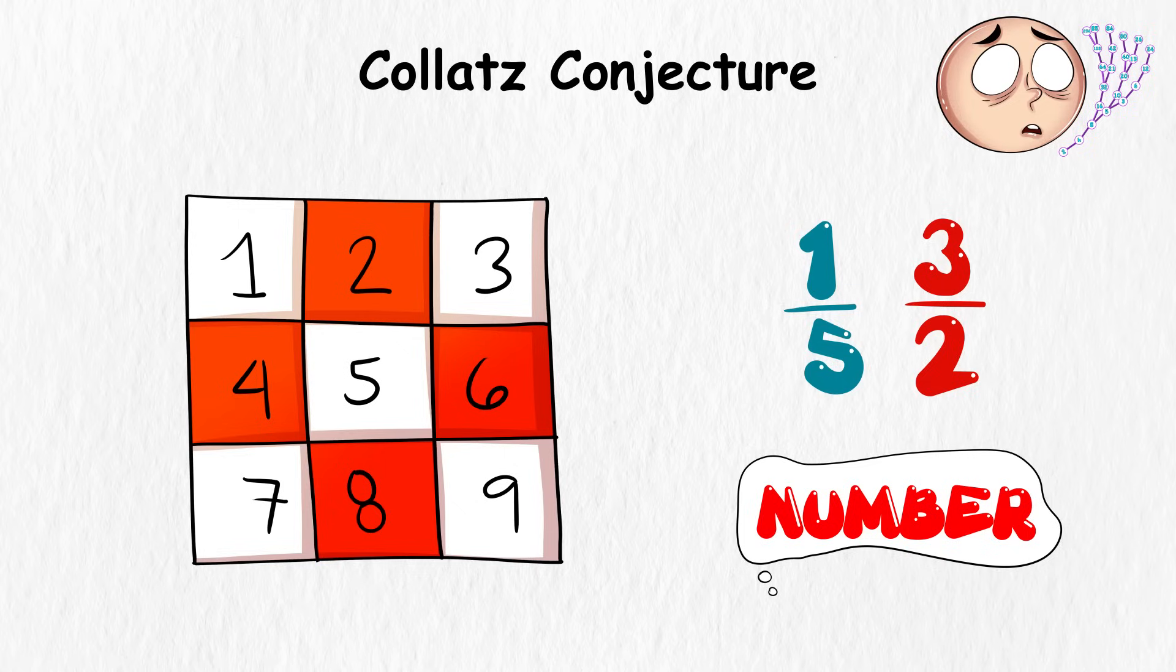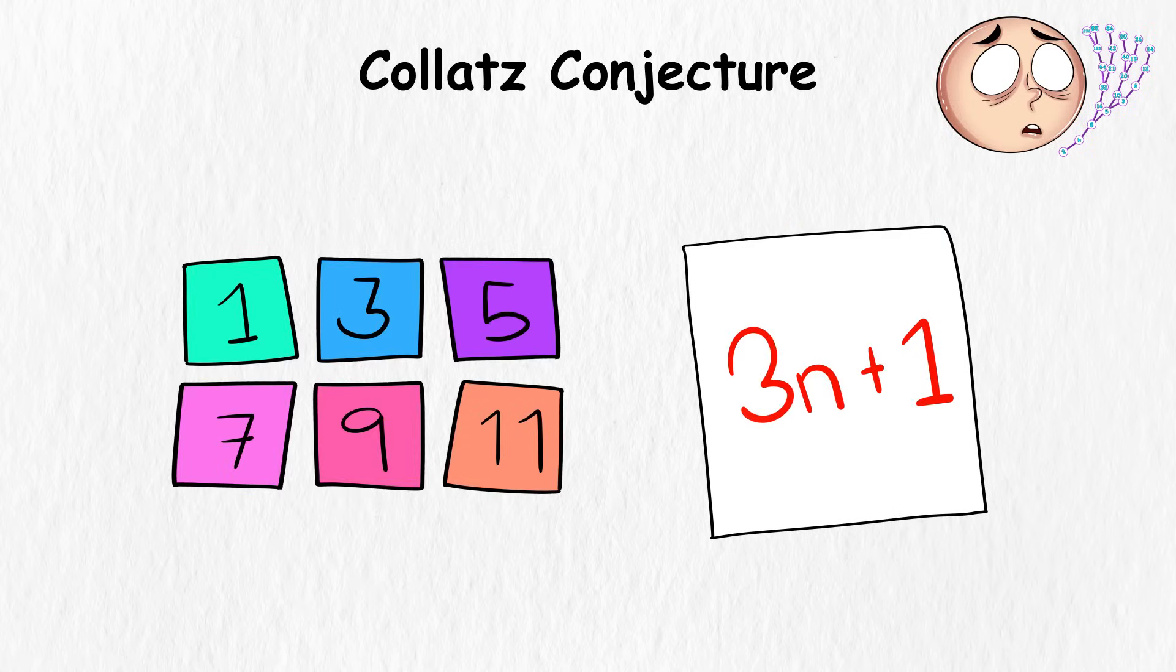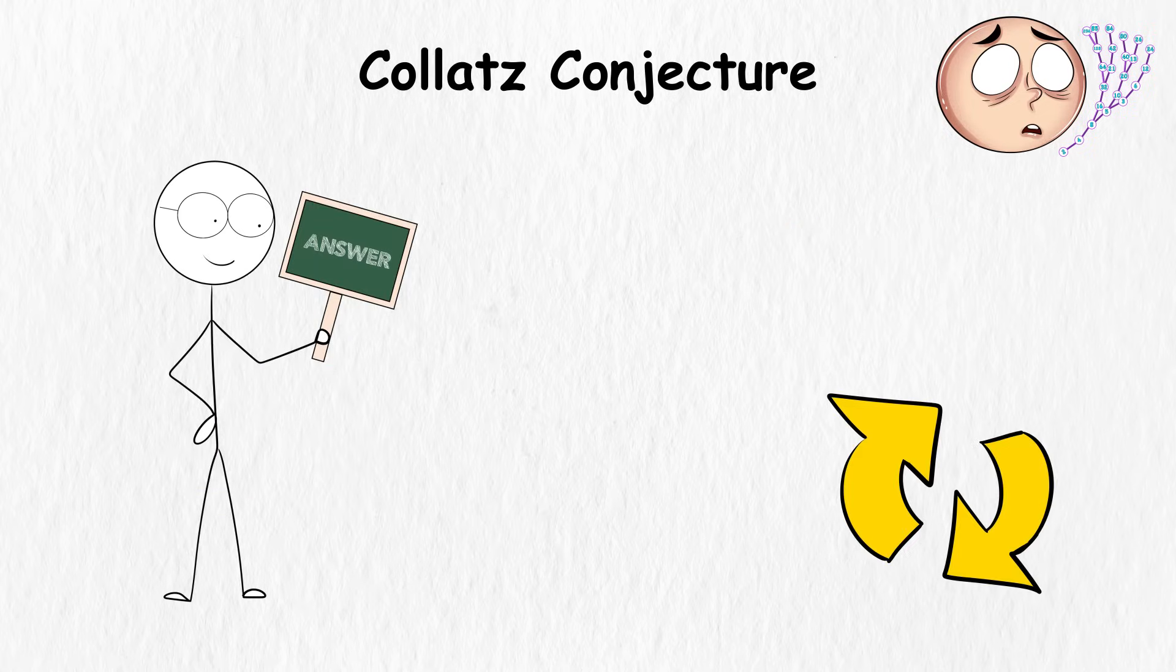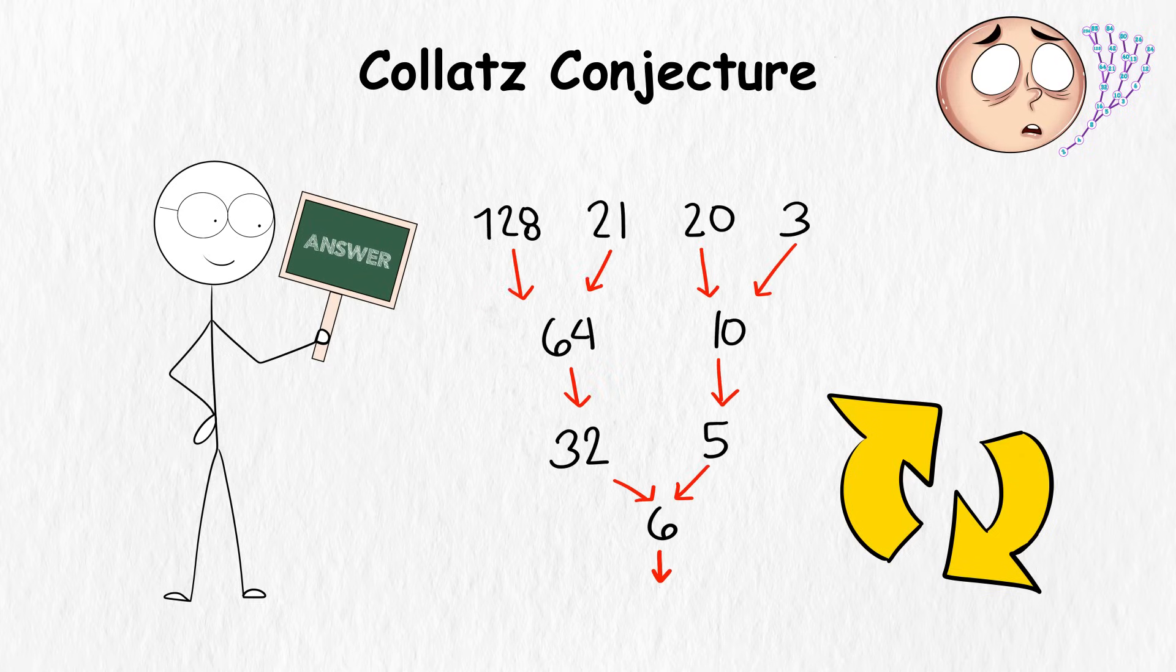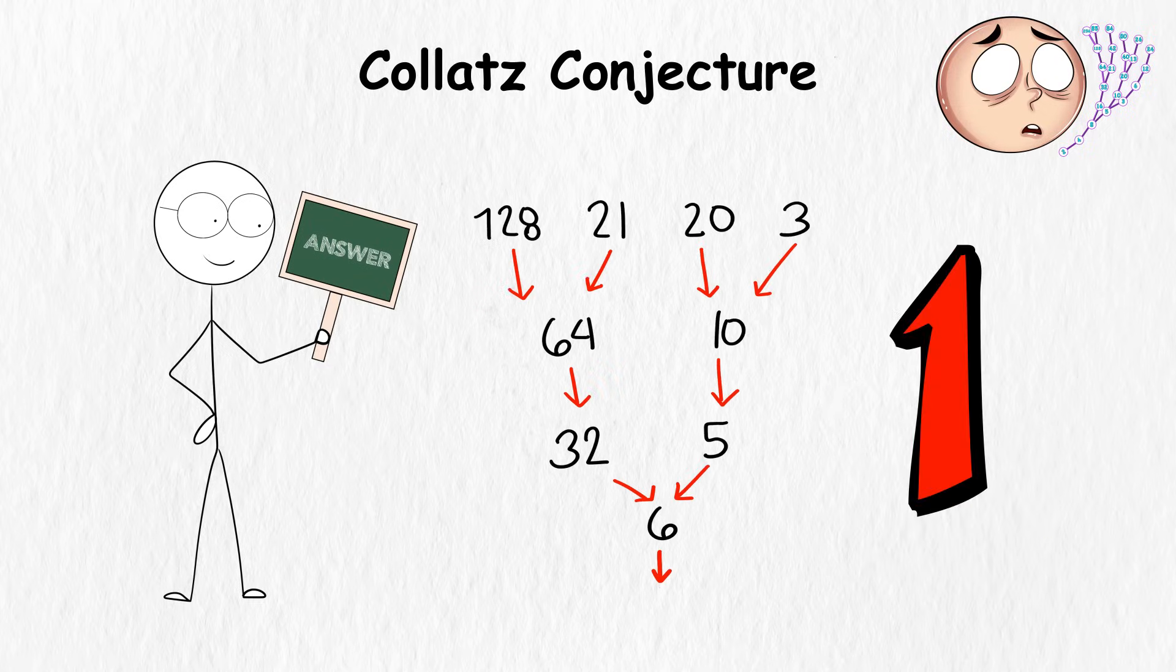This problem sounds as simple as wiping dust off a surface. It says that if you must start with any positive integer, a number that's not a fraction, if it's an even number, you divide it by 2. If it's odd, you triple it and add 1. Then you take the result and repeat the process. No matter what number you start with, you'll eventually reach 1.